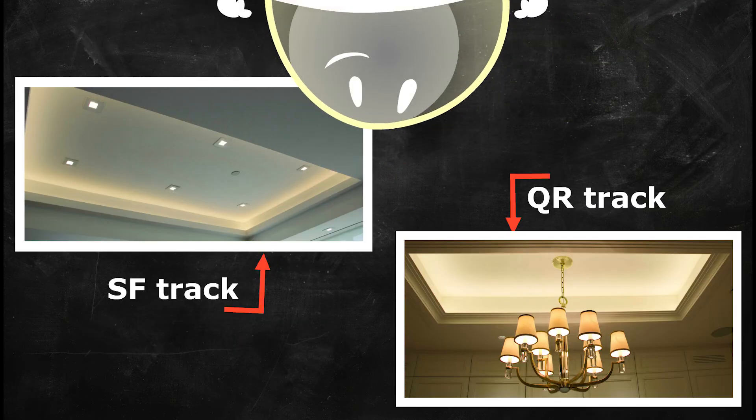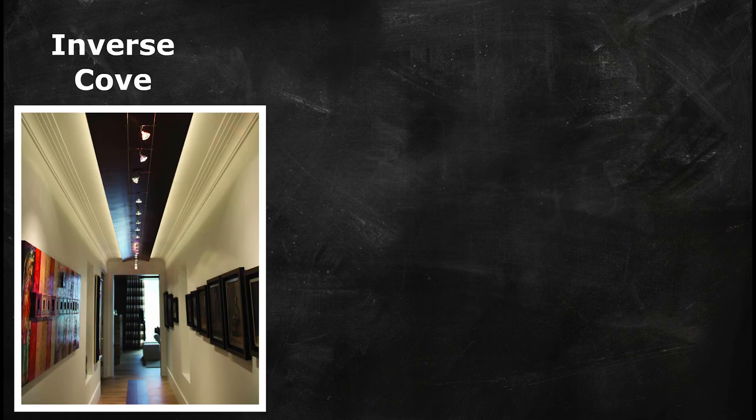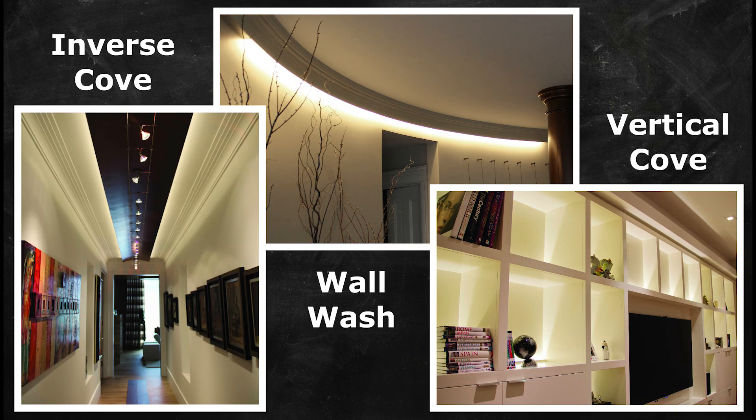These are two examples of popular ceiling coves, but the same three principles of light dispersion, line of sight, and shadows should be applied to inverse coves, wall washes, vertical coves, as well as any other hidden accent lighting.